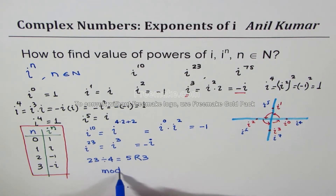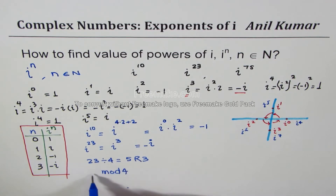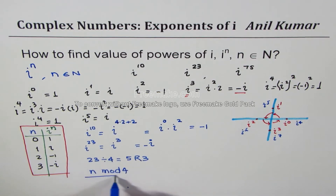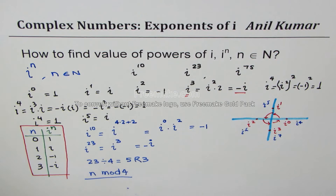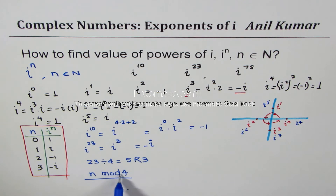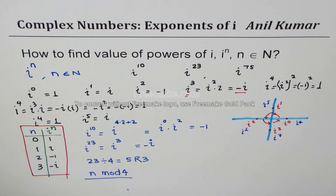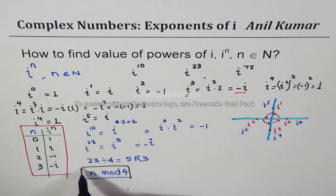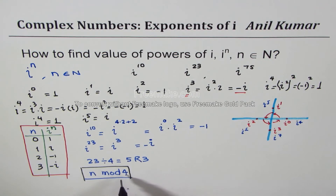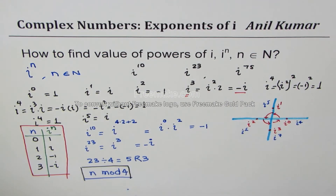In general, we can use the mod 4 function. By replacing the exponent with n mod 4, we can always find the answer. If n mod 4 gives the remainder, we look up that value in our pattern table to get the result.